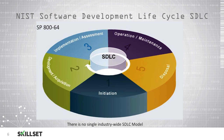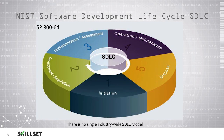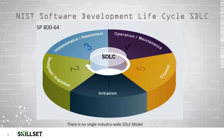The National Institute of Standards and Technology, or NIST, provides a Software Development Lifecycle, or SDLC, as part of their special publication 800-64. Here, the first phase is the initiation phase. Phase 2 is known as the development or acquisition phase. Phase 3 is the implementation and assessment phase. We then move on to phase 4, which is the operation and maintenance phase, and then the disposal phase. We will move back to initiation as necessary to incorporate new features or any other required changes.